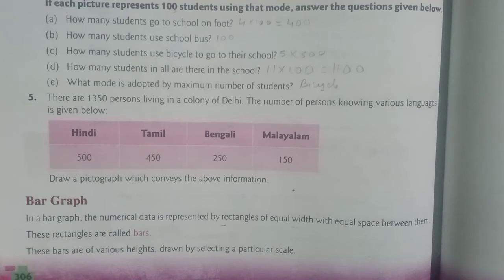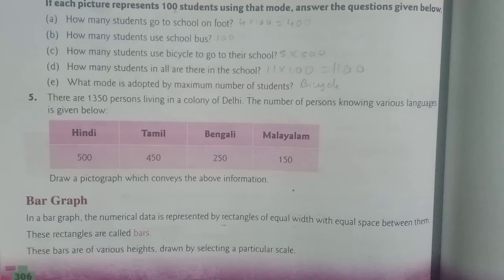Hello students, now we'll continue with lesson number 25. In this lesson we'll see bar graphs. So what is meant by bar graph? In a bar graph, the numerical data is represented by rectangles of equal width with equal space between them.